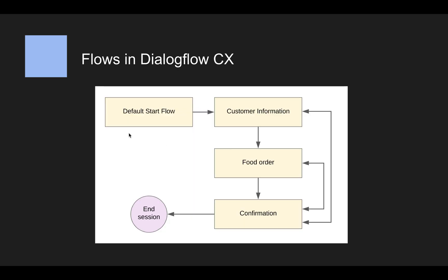As an example — I copied this from the Dialogflow CX documentation — for an order bot, what it could look like is that you have the start flow, which is the opening conversation and welcome. Next you grab the customer information: name, delivery address, whatever. Then you have the part of the conversation that is actually ordering the food, adding drinks, etc. And in the end you have a conversation flow. You've basically split up your conversation into components.